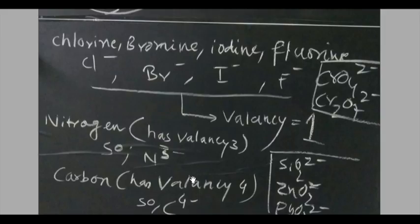Carbon has a valency of 4. You can just write the electronic configuration of carbon which is 2,4. So it has 4 electrons. It needs another 4 electrons to complete its octet. So it will have a valency of 4. So these things are very easy.